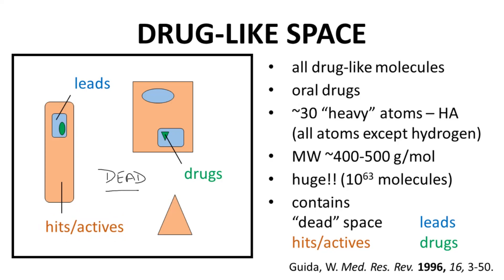Within the hit regions, some compounds might have good enough activity, good enough properties, to be leads — the blue regions, much smaller. Finally, some of the lead spaces may contain viable drugs, in dark green. The location of hit spaces, lead spaces, and drug spaces change if you look at different targets, because a different target will bind to molecules with different structures.